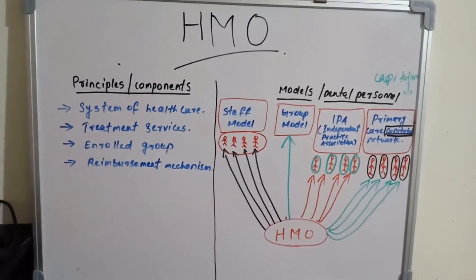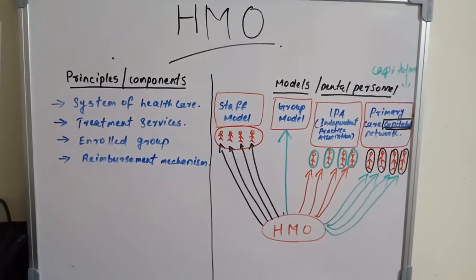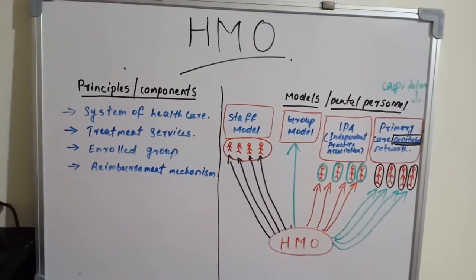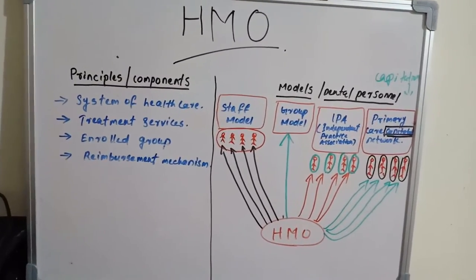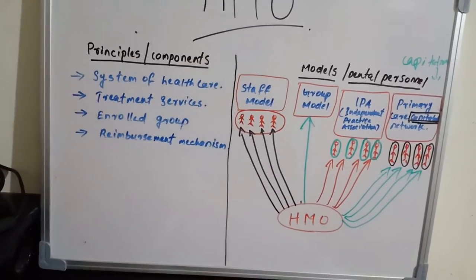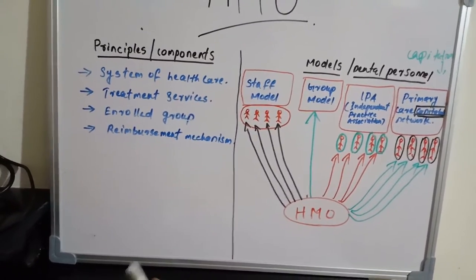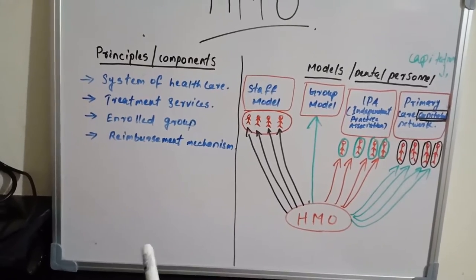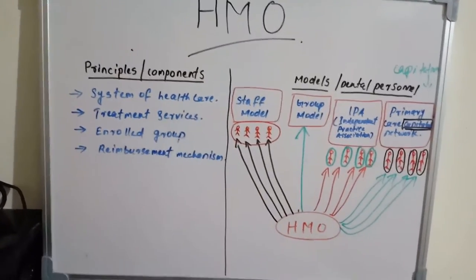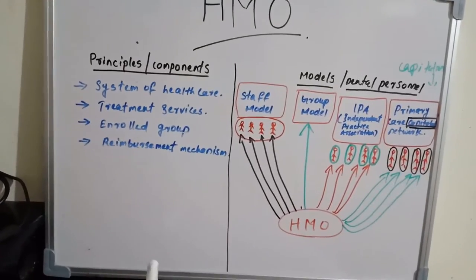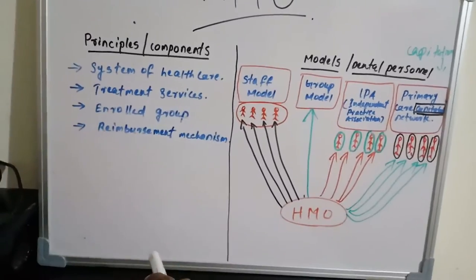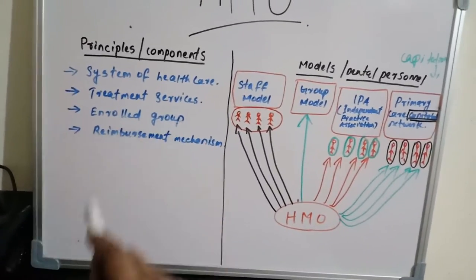The health maintenance organization or HMO is a different group practice. It has basically four components or principles. There is a system of health care, that is providers where the patients can avail treatment. The second one is the treatment services offered by these providers.